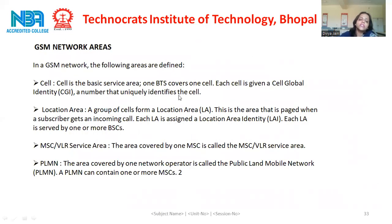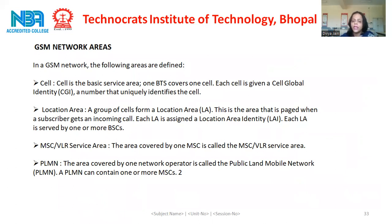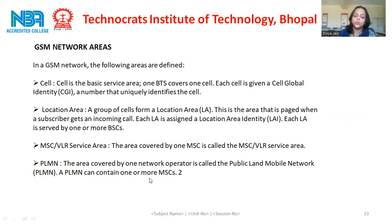In GSM, the following areas are defined. A cell is the basic service area; one BTS covers one cell. Each cell is given a Cell Global Identity CGI, a number that uniquely identifies the cell. A location area is a group of cells; this is the area that is paged when a subscriber gets an incoming call. Each location area is assigned a Location Area Identity LAI, and is served by one or more BSCs. The MSC/VLR service area is the area covered by one MSC. A PLMN — public land mobile network — is the area covered by one network operator, and a PLMN can contain one or more MSCs.